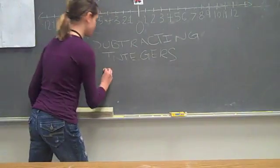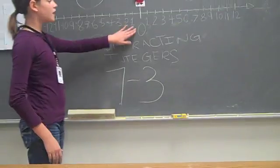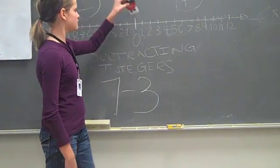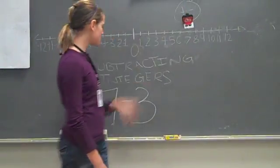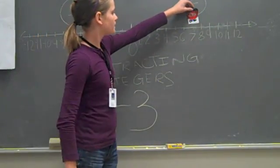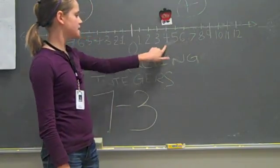Our first equation is 7 minus 3. We start our car at the origin, which is 0, and we go 7 spaces to the right. Then we subtract 3, so we go back 3 spaces. Our answer is 4.